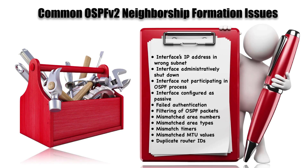Router IDs should not be the same — we have to have unique router IDs. Notice that process IDs do not have to match. With EIGRP we specified an autonomous system number, but with OSPF we give a process ID, and those process IDs are locally significant — they do not have to match between neighbors.